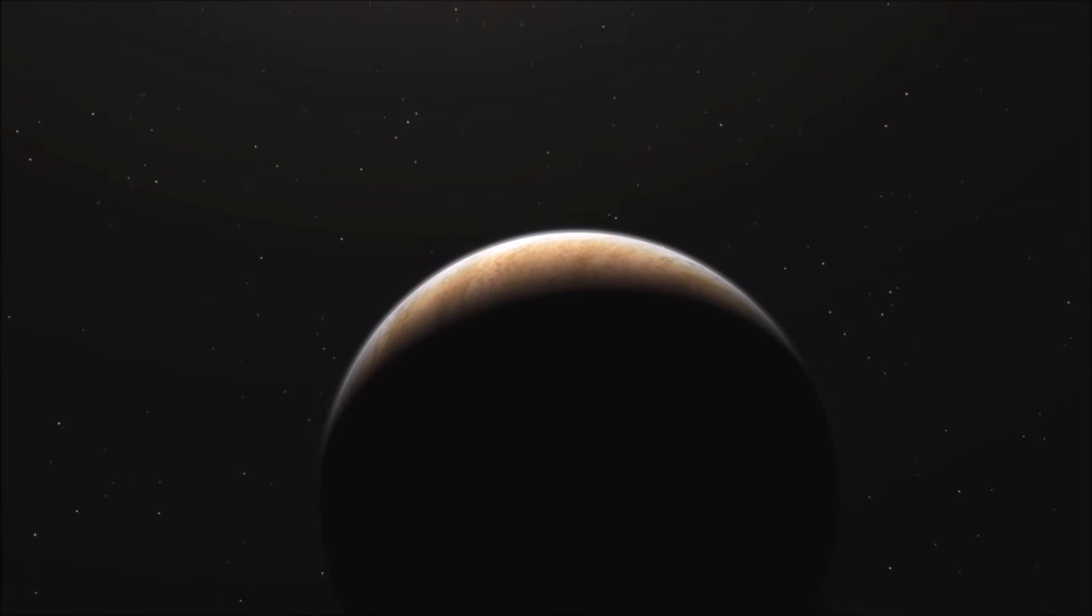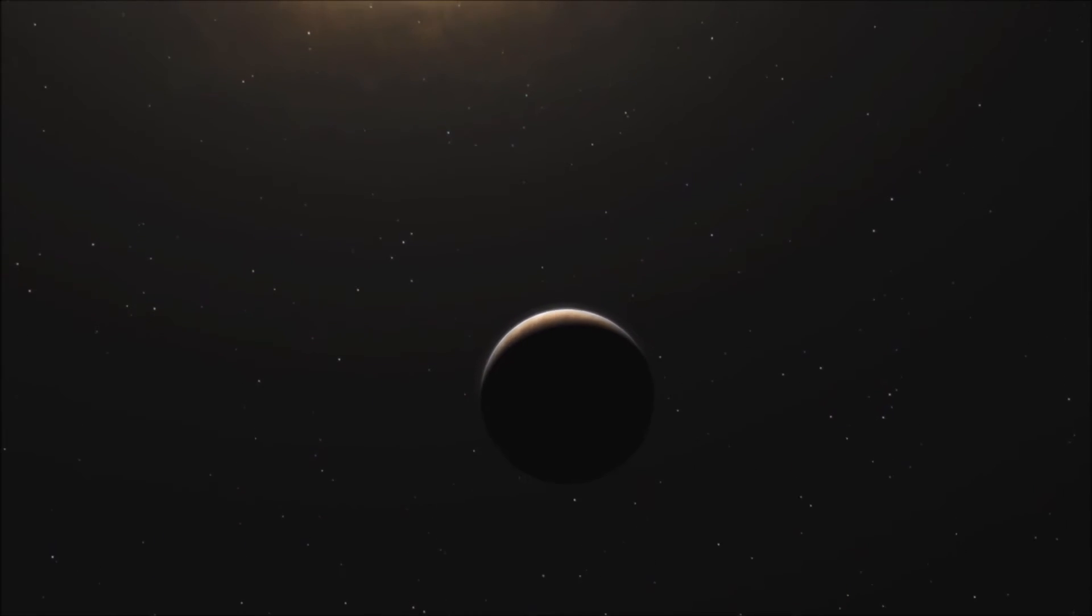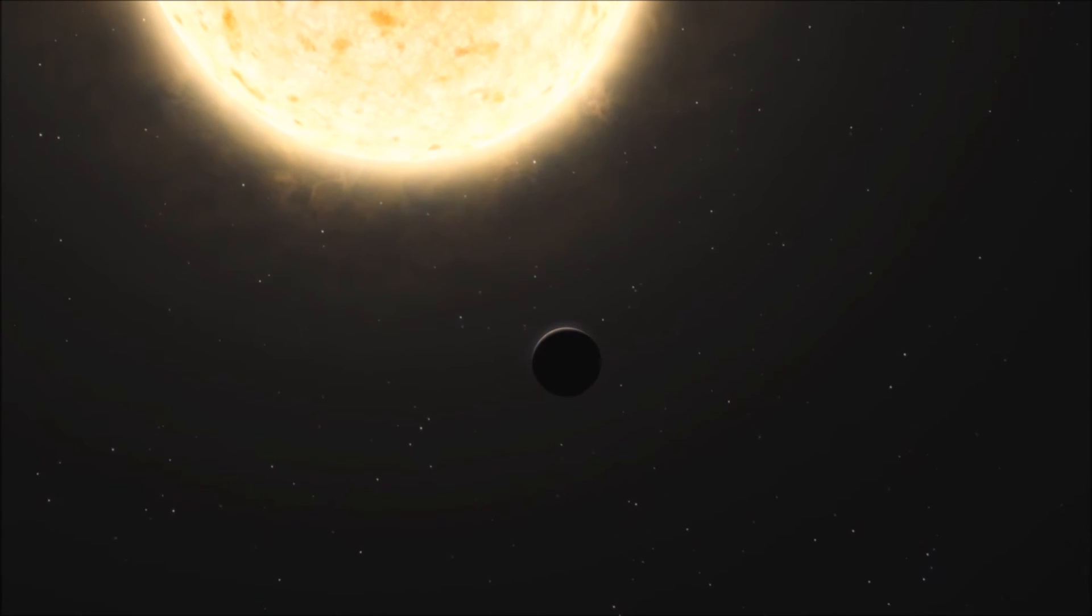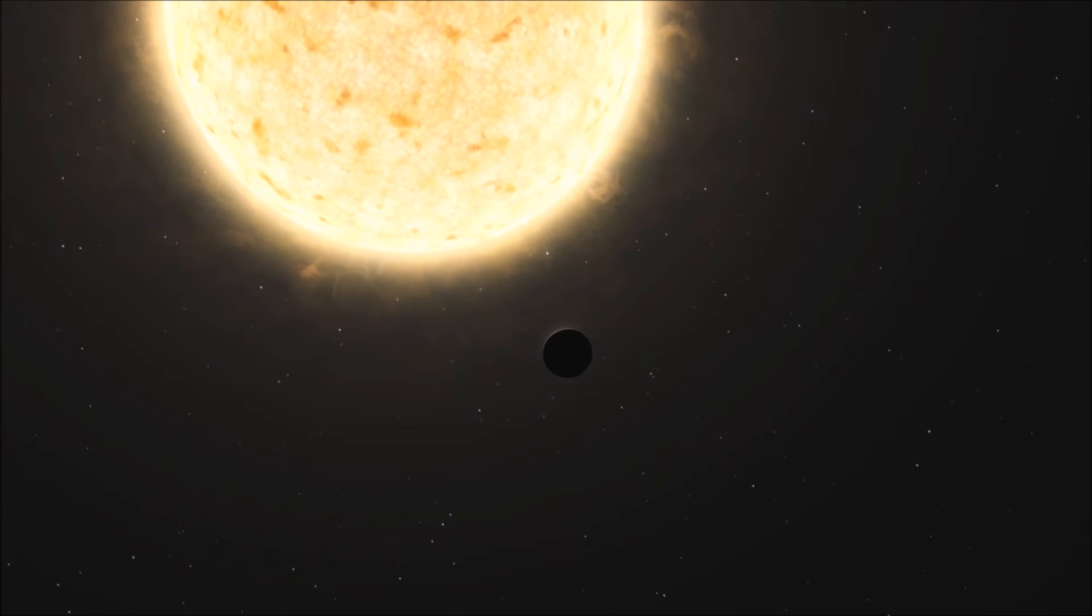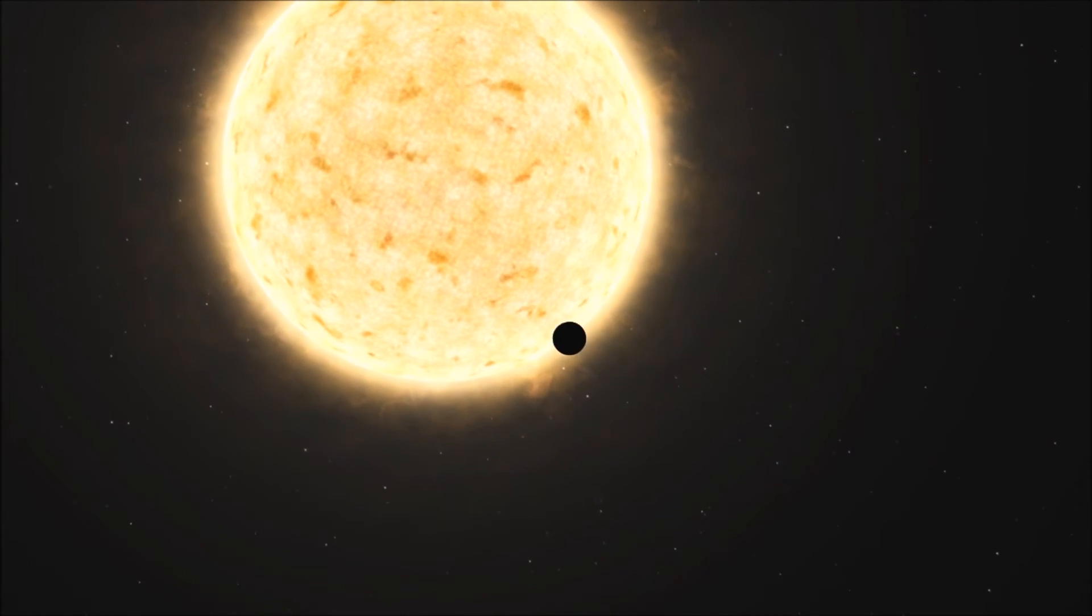The planet HIP-13044 b is also one of the few exoplanets known to have survived its host star massively growing in size after exhausting the hydrogen fuel supply in its core, i.e. the red giant phase of stellar evolution.